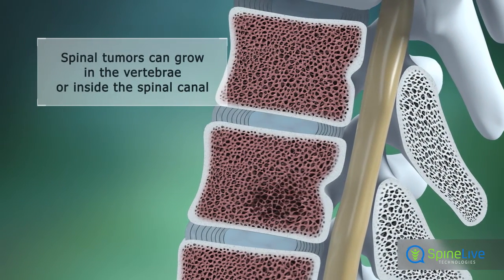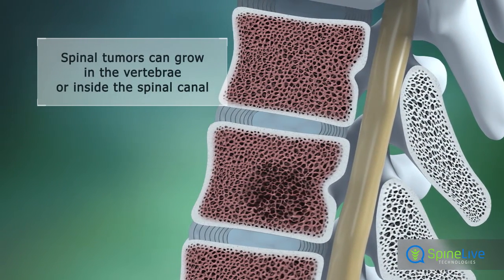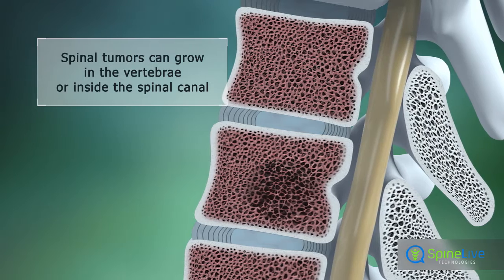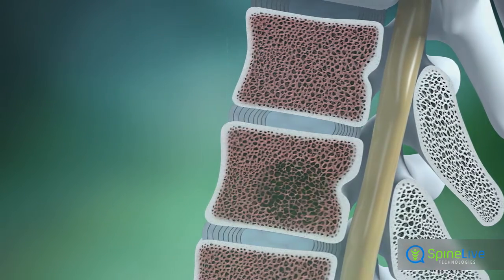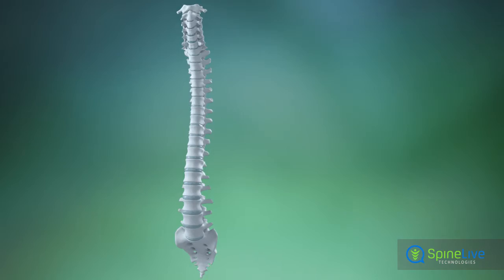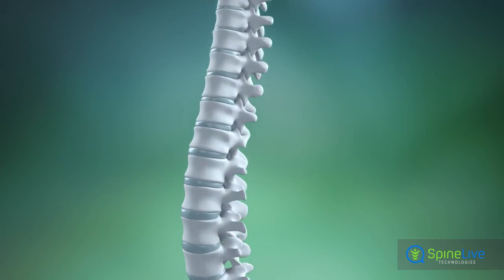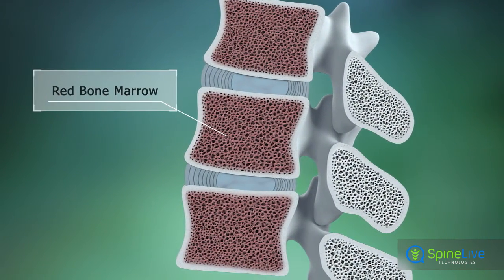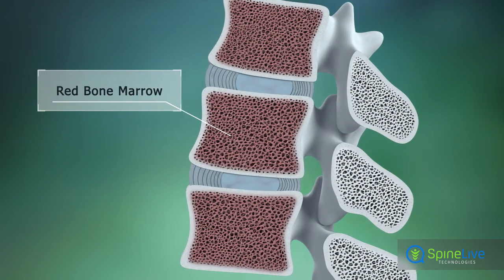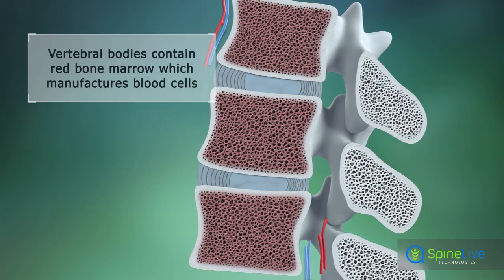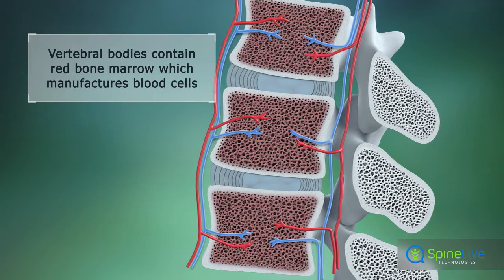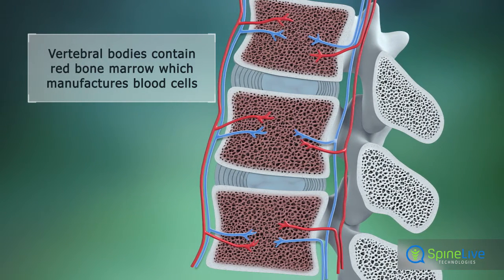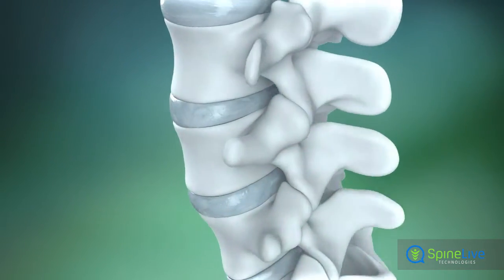A spinal tumor is a growth that develops within the bones of your spine or inside your spinal canal. The vertebral bodies are filled with red bone marrow — this tissue produces blood cells and has a rich blood supply.